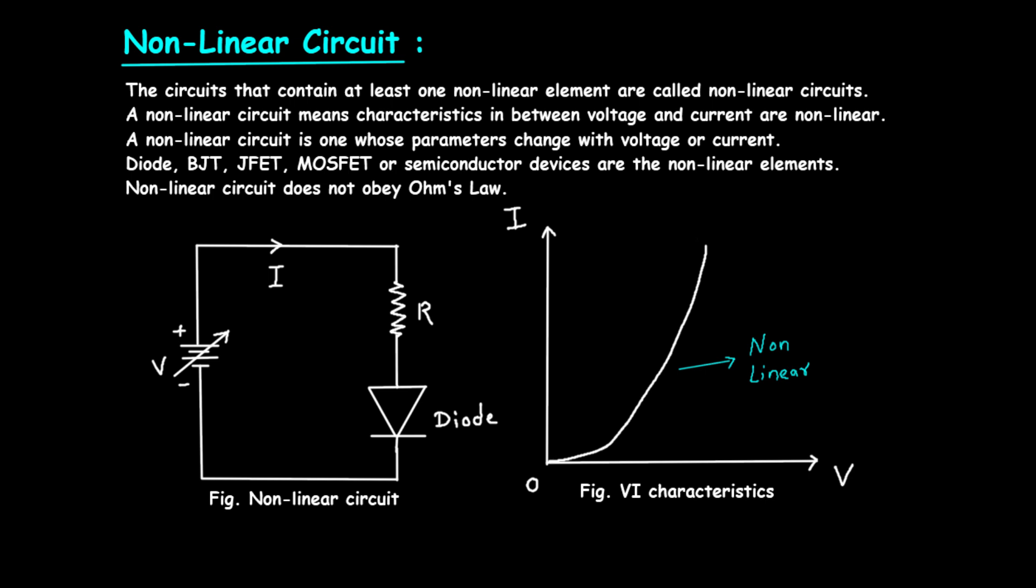This is different from linear circuits, where the voltage-current relationship is a straight line and the parameters, such as resistance, remain constant regardless of the voltage or current. In non-linear circuits, the parameters change with the voltage or current. This change causes the voltage-current relationship to be more complex and not directly proportional.